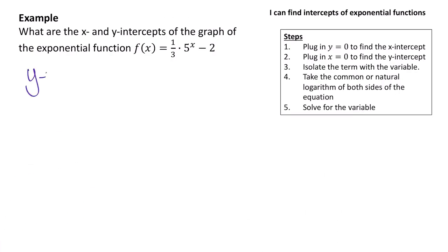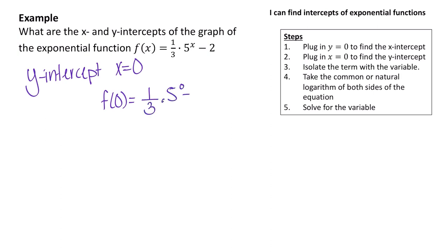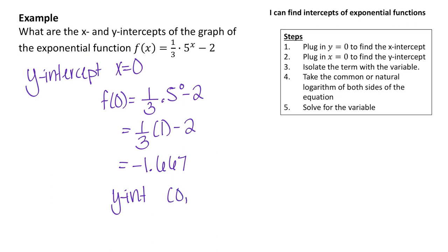Now let's find the y-intercept, which occurs where x equals 0. Plugging in x equals 0 gives f of 0 equals one-third times 5 to the 0 minus 2. Since 5 to the 0 is 1, this becomes one-third times 1 minus 2, which is one-third minus 2. On the calculator that equals negative 1.667. So the y-intercept is at (0, negative 1.667).